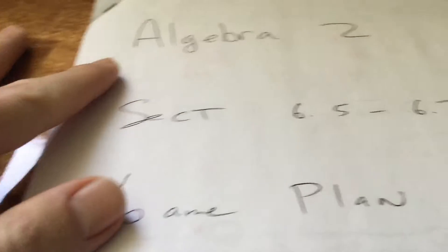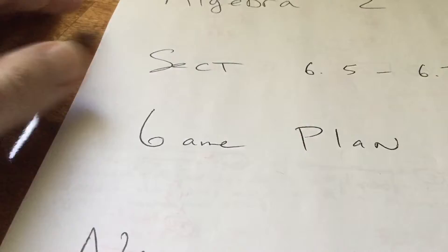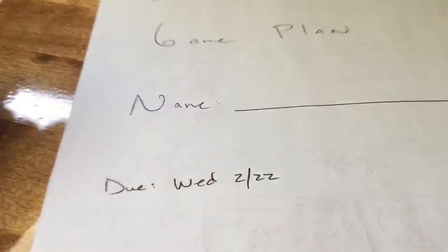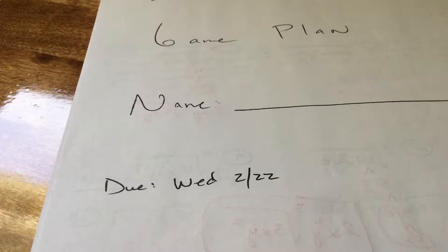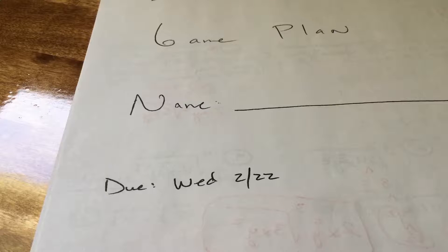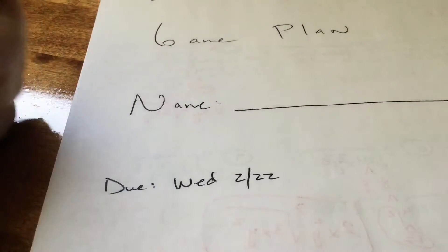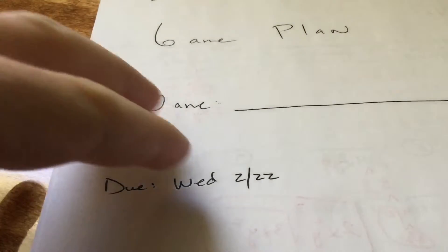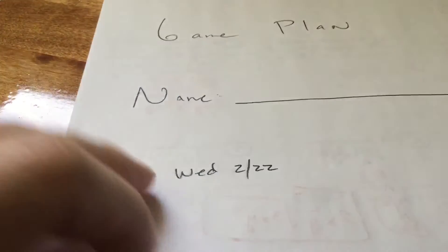Alright, Algebra 2, welcome to your section 6.5-6.7 game plan video for spring 2019 — disregard that due date. It will be due probably by the end of the month, when I get back on the 11th. We've got a lot of material we've covered, so we will actually finish the chapter 5 quiz and test, and then chapter 6 will be completed pretty quickly, all before the end of the quarter — definitely before the end of February. When I get back, we are going to move quick.